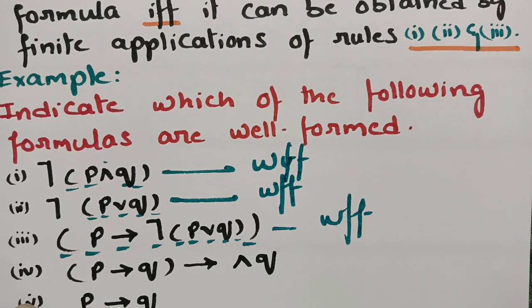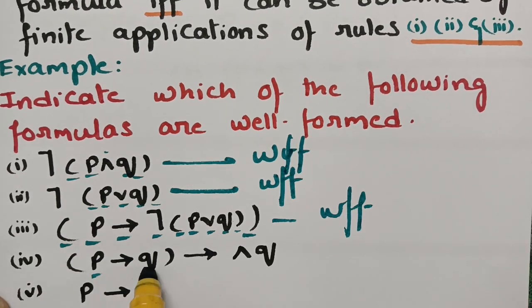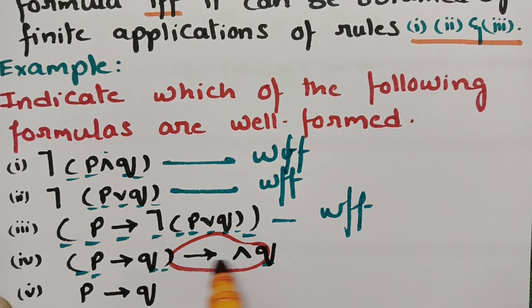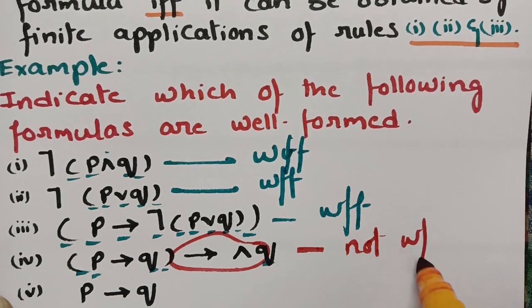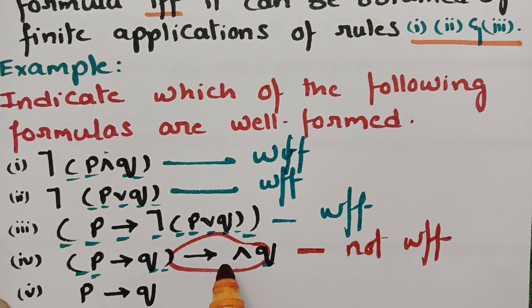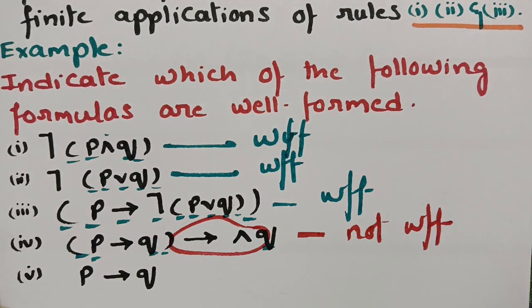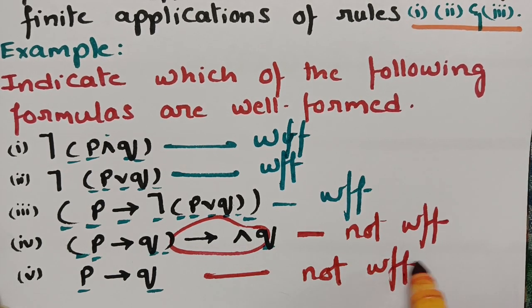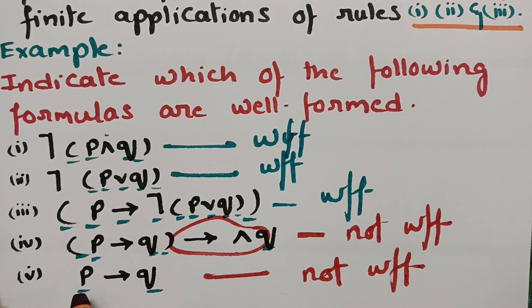Now for the fourth example: variables are seen, parenthesis are seen, but if you observe the connective symbols, there are two connectives side by side — an implication and a disjunction right next to each other. So this is NOT a well-formed formula. And the fifth example: in the string there are variables and a connective, but there are no parenthesis — so this is also NOT a well-formed formula.